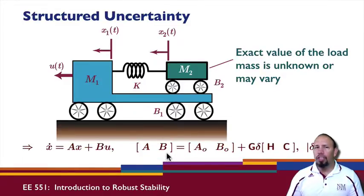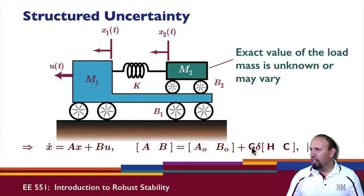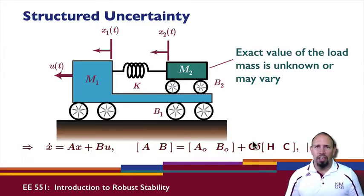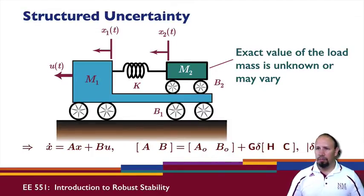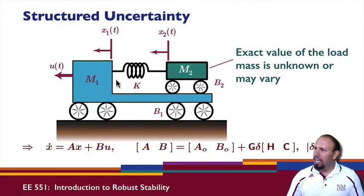Here A and B are both uncertain. A equals A-naught plus G·delta·H, and B equals B-naught plus G·delta·C. Notice that the G structure is the same for both A and B. Delta has magnitude less than or equal to one. We can set up a problem like this.